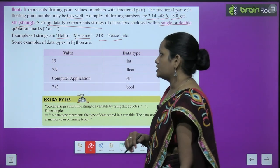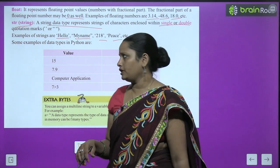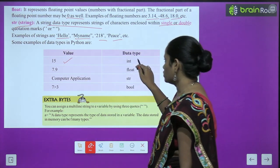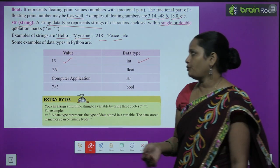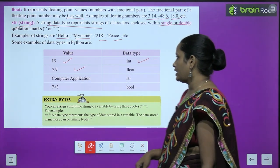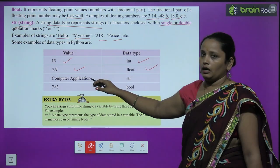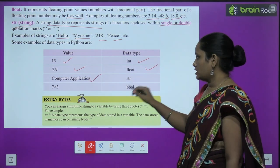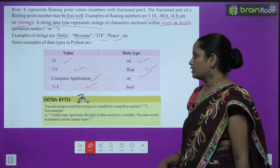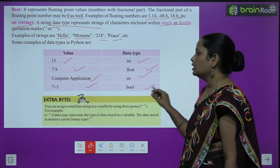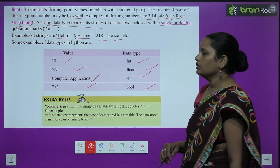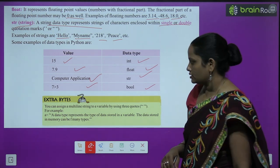Some examples of data types in Python: the number 7 is integer form, 7.9 is float form, 'computer application' is string form, and '7 is greater than 3' is boolean — you will get True or False as the answer.